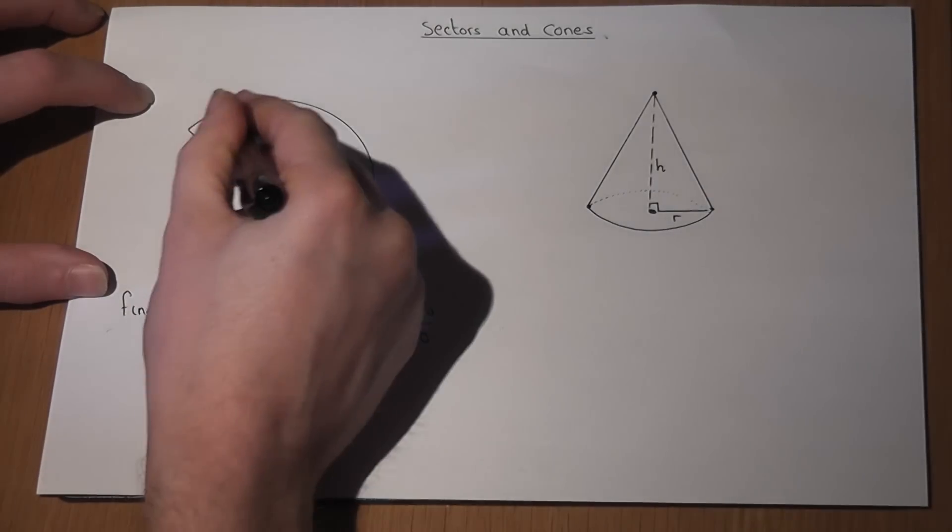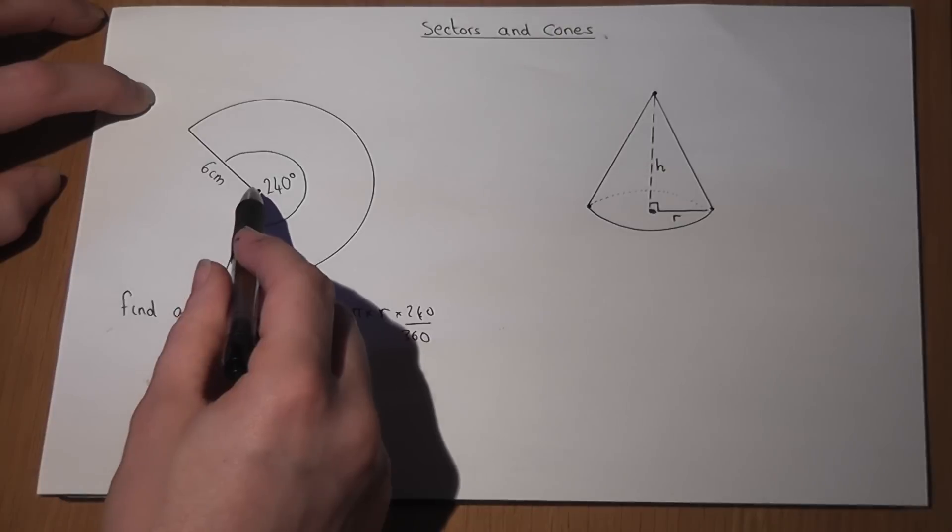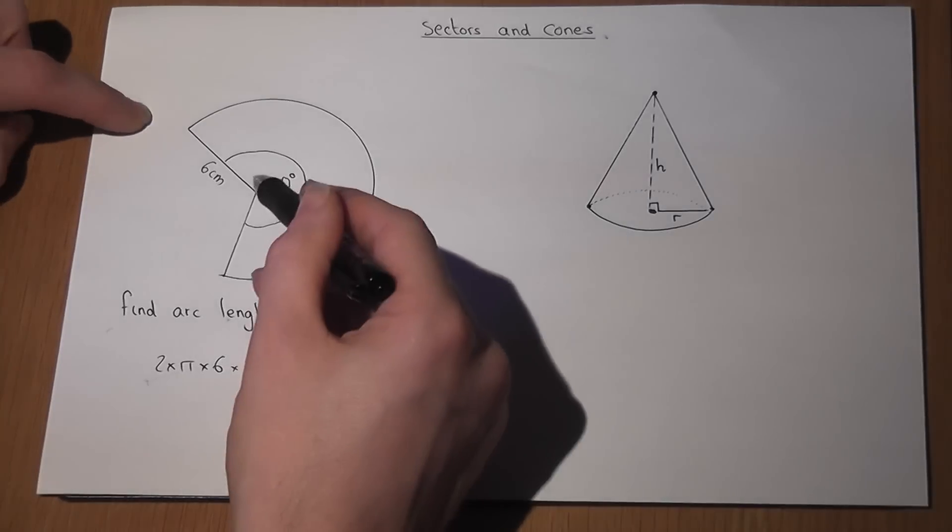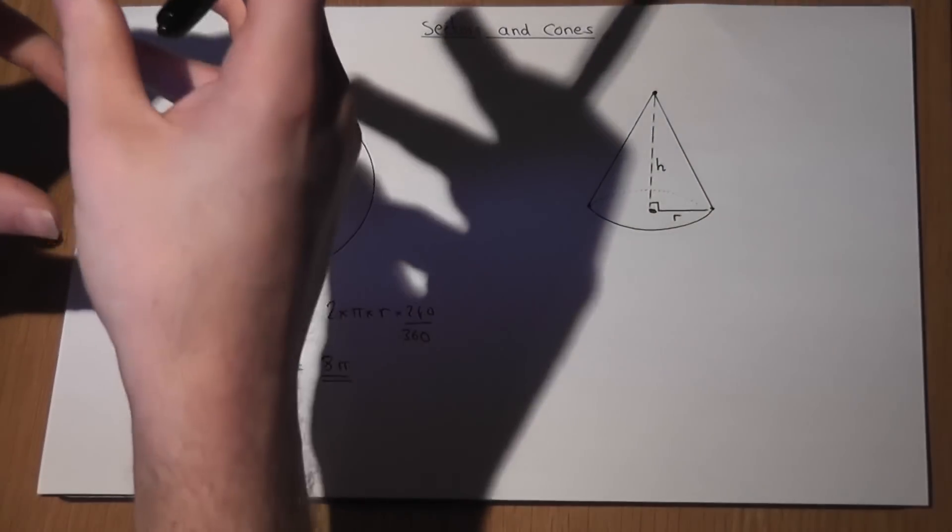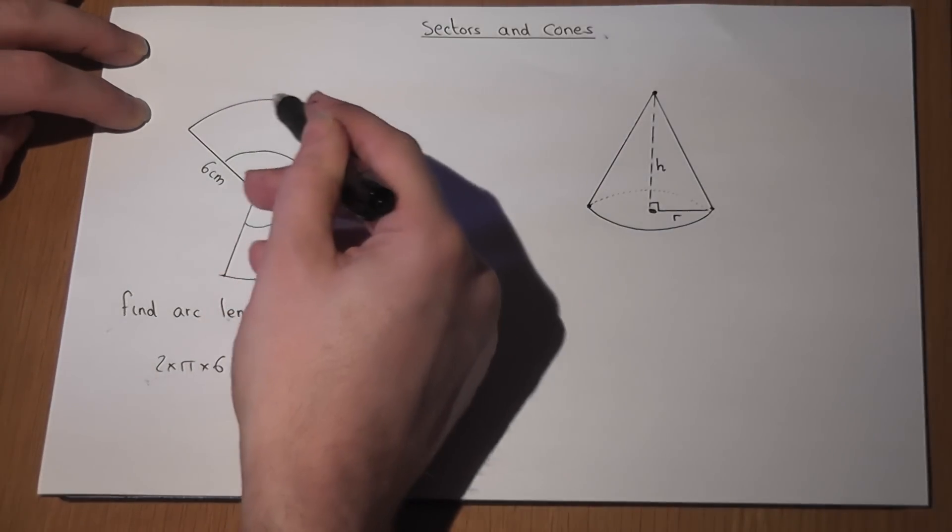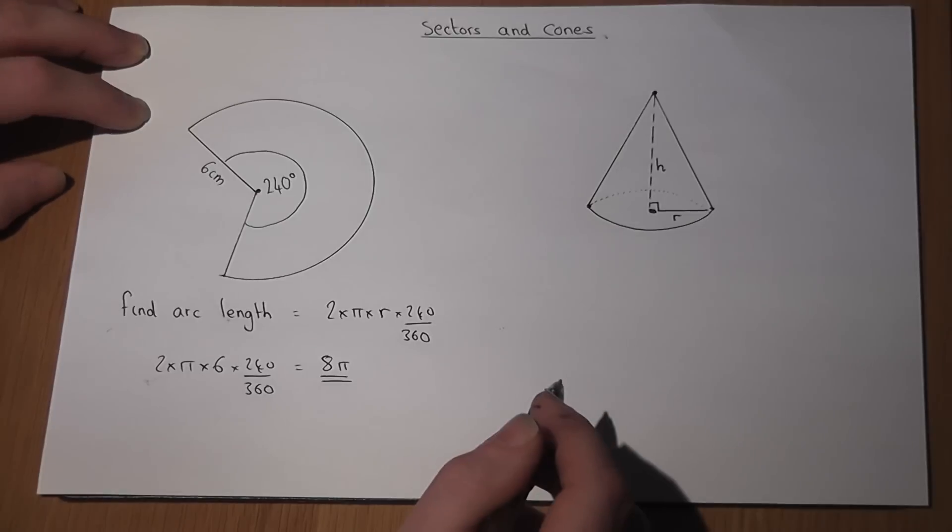So that length there is 8 pi. Now visualization. This is now joined together to produce a cone. So these two edges are placed together, it perks up, that becomes the top of the cone, and this curved part here forms the curved part, i.e. the circle on the bottom.